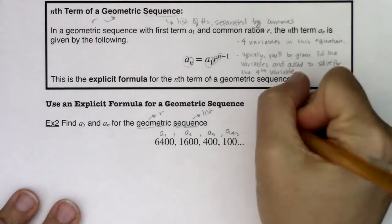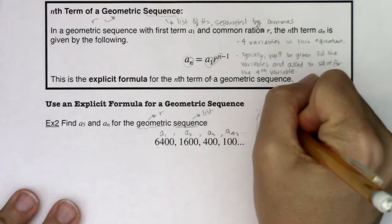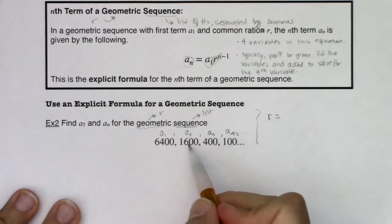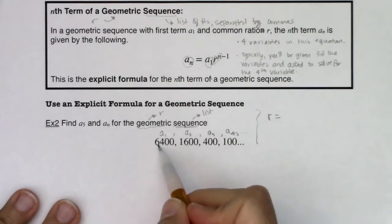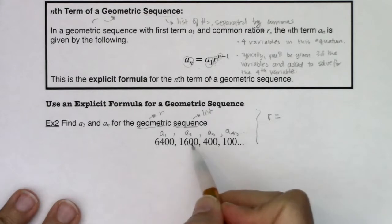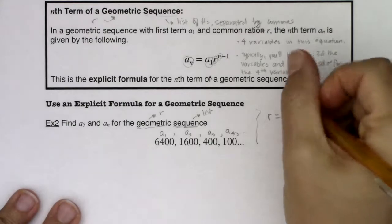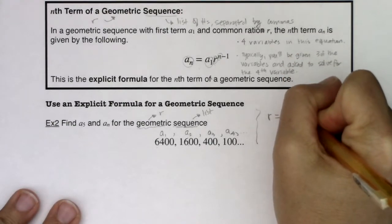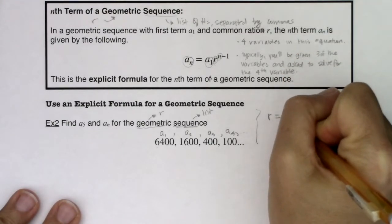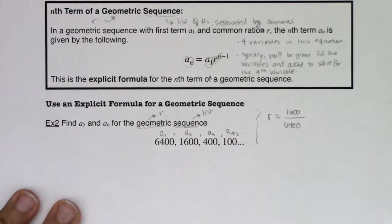If I wanted to figure out what the common ratio was, I need to take a more current term and put it in ratio to the previous term. For example, I could make a ratio of a sub 2 to a sub 1. So we could do 1,600 in ratio to 6,400.